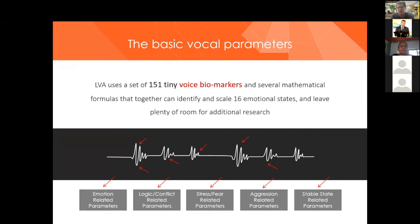The 151 voice biomarkers that we pick up today are able to identify 16 different emotions, and they classify into five major categories: emotion and excitement related parameters; logical conflict related parameters; indicators that talk about stress and fear; multiple ones that talk about aggression; and the stable state parameters which talk about embarrassment, concentration, and anticipation — things that by nature have more latency.